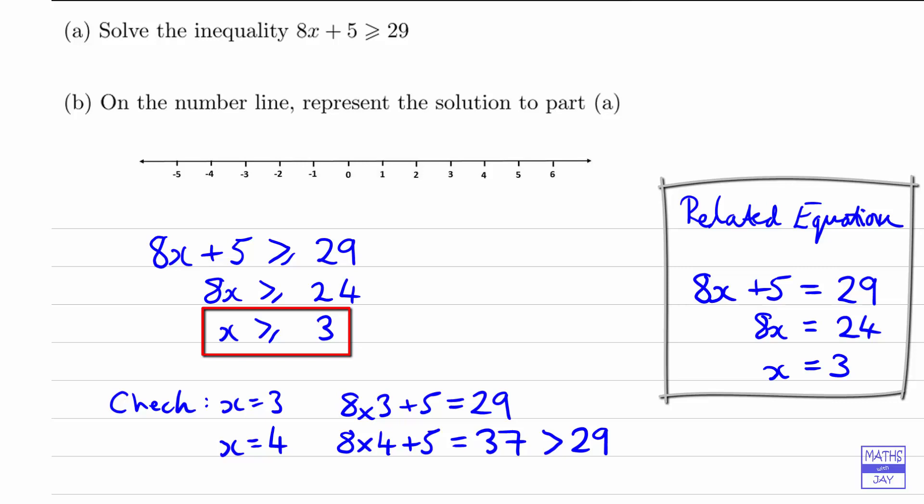So we're doing two checks to check that we've got the inequality the right way around. We've got greater than or equal to 3, rather than less than or equal to 3.